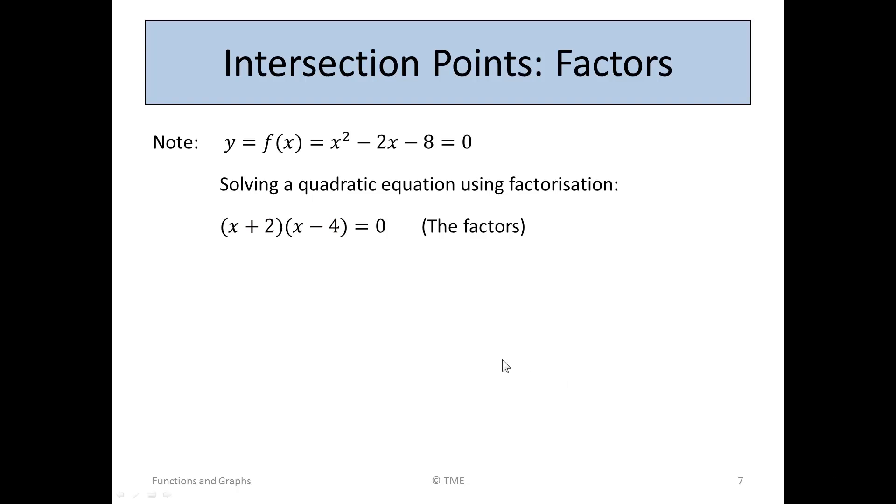So these factors work. x plus 2 by x minus 4. They're the factors. So either x plus 2 is 0 or x minus 4 is 0. So if x plus 2 is 0, x equals minus 2. Or if x minus 4 is 0, x must be 4.